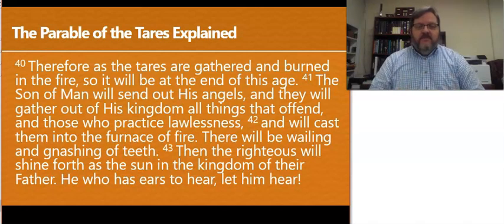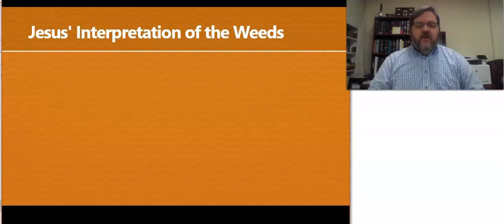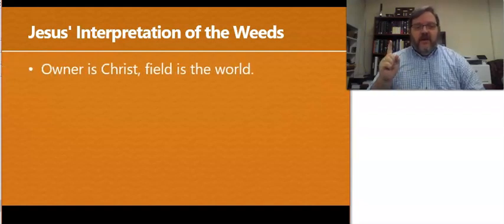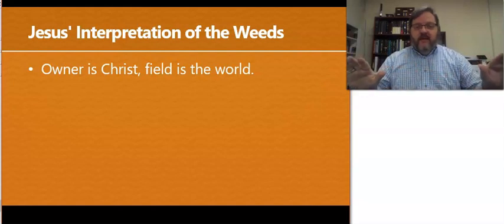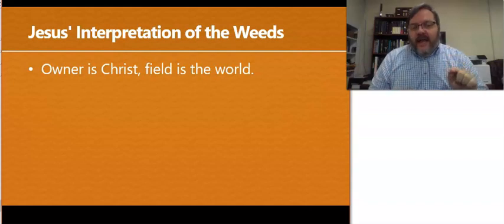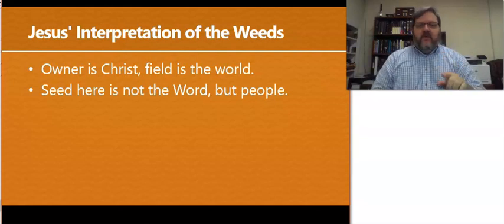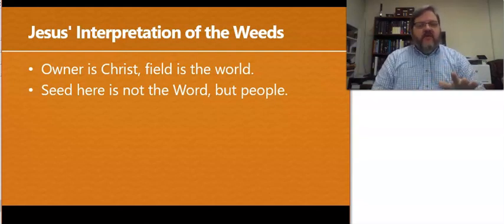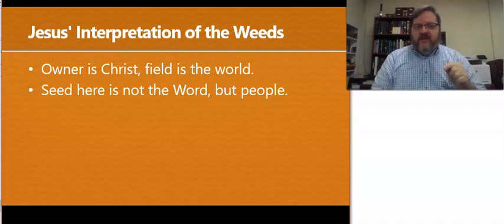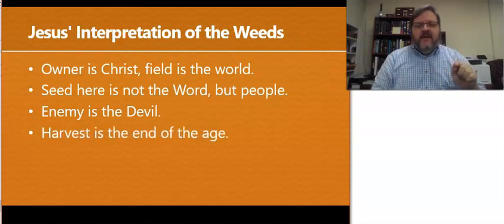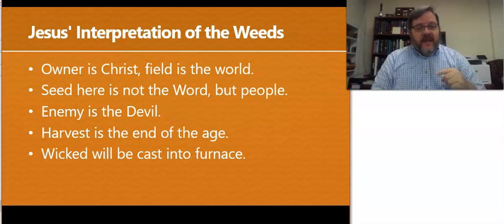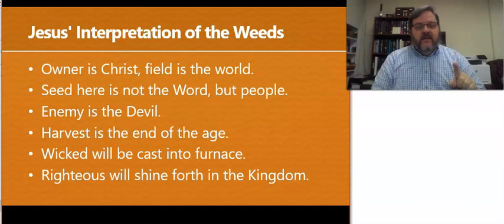So Jesus tells the story, tells two other stories, sends everyone away, and then explains the story only after being asked. So who's in the story? Well, the owner. The owner is Christ, the king. The field is the world. The seed here is not the word. Remember, in the other parable, be careful. As we change story to story, the things in the people in it may change. In the sower, the seed was the word. Here, it's the people. The enemy is the devil. The harvest, the end of the age. When everything's over. The wicked will be cast into the furnace, but the righteous will shine forth in the kingdom.